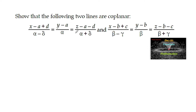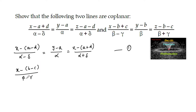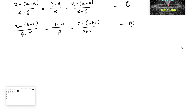Show that the following two lines are coplanar. The given lines are: x minus (a minus d) upon (alpha minus delta) equals y minus a upon alpha equals z minus (a plus d) upon (alpha plus delta) — equation one. And another equation: x minus (b minus c) upon (beta minus gamma) equals y minus b upon beta equals z minus (b plus c) upon (beta plus gamma) — equation two.